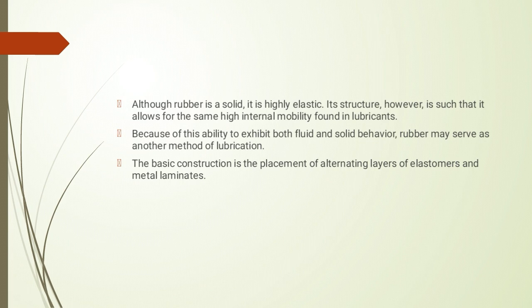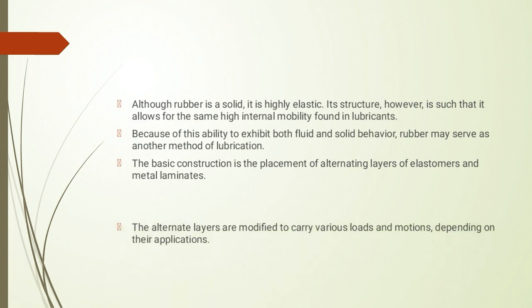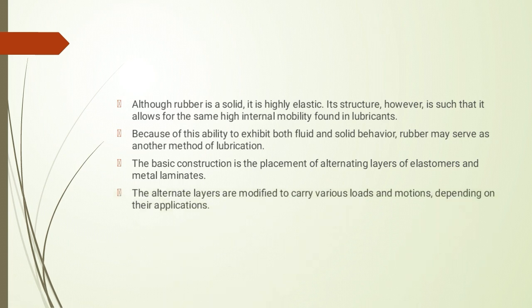The basic construction is the placement of alternate layers of elastomer and metal laminate — जैसे कि हमने diagram में देखा। Metal कौन से? Aluminum, titanium, या steel कोई भी prefer किया जा सकता है। Alternate layers are modified to carry various loads and motions depending on their application. इनका इस्तमाल bridges में भी होता है जहाँ vehicle movement से vibration induced होते हैं।